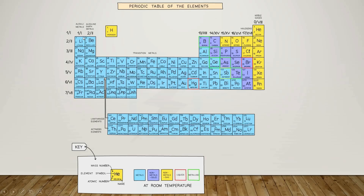You can also see that these elements are arranged in vertical columns. For example, if you look at the first column — the first group — that is lithium, sodium, potassium, rubidium, cesium, francium. This is called a group.